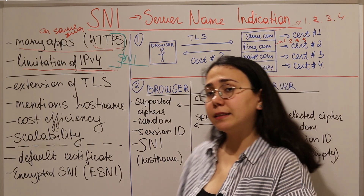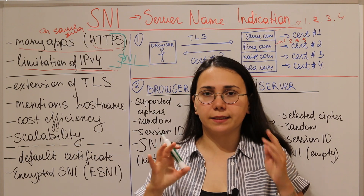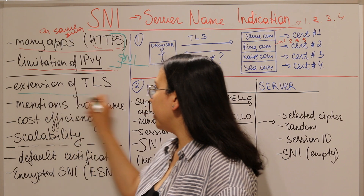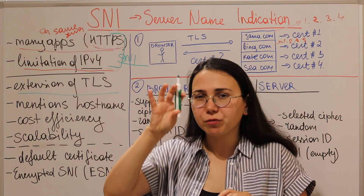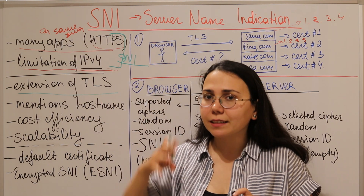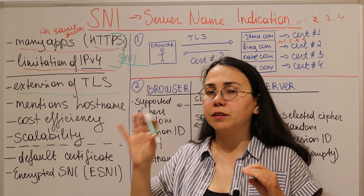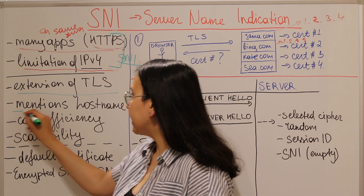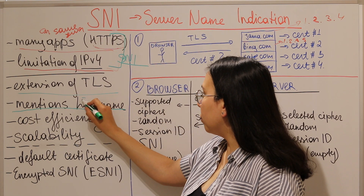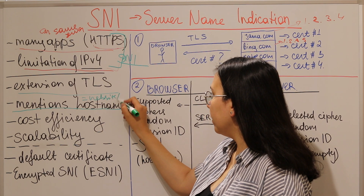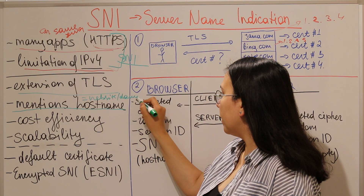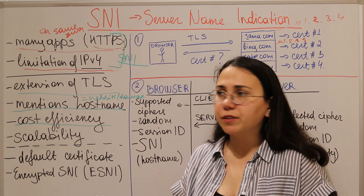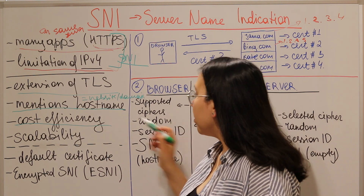This is exactly where SNI comes in. SNI is not a protocol — it's an extension of TLS. It's an element that makes TLS more usable in today's cloud infrastructure. SNI carries the hostname — the domain we want to access — within the TLS handshake. It's cost-efficient because we don't need to issue more IP addresses; we simply include the hostname when initiating the connection.